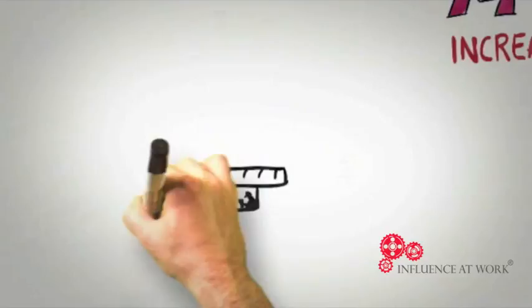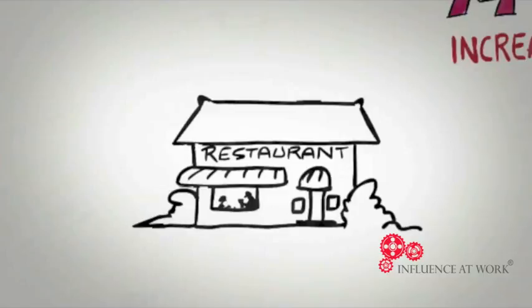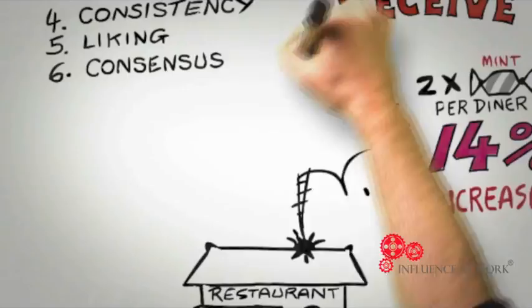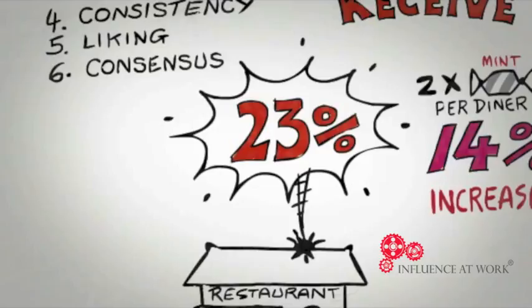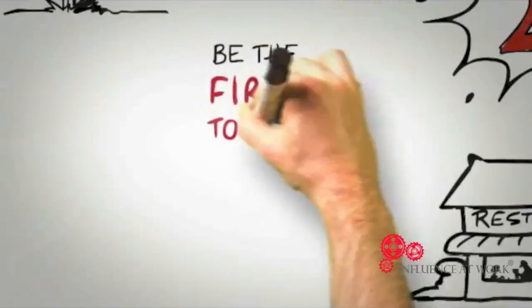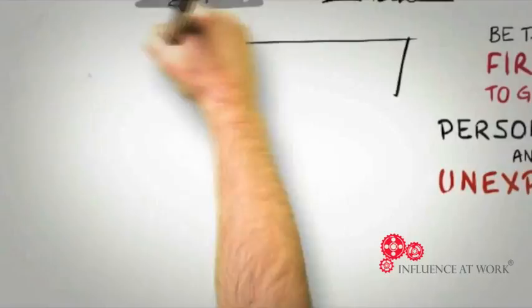But perhaps most interestingly of all is the fact that if the waiter provides one mint, starts to walk away from the table, but pauses, turns back, and says 'for you nice people, here's an extra mint,' tips go through the roof—a 23% increase, influenced not by what was given, but how it was given. So the key to using the principle of reciprocation is to be the first to give and to ensure that what you give is personalized and unexpected.